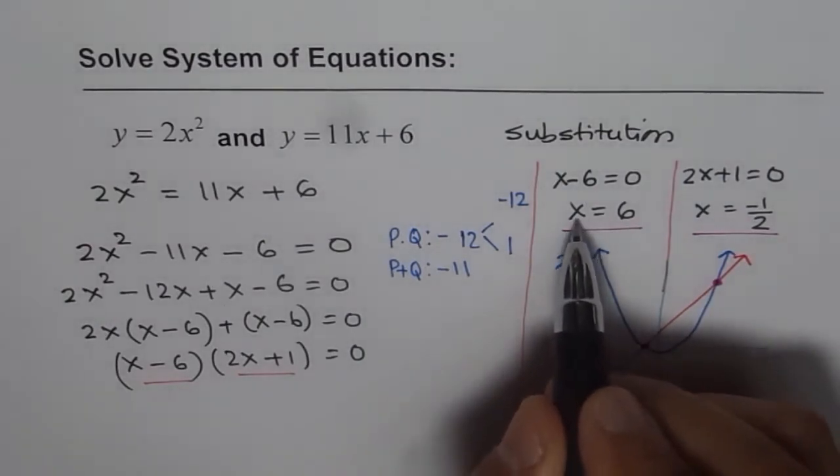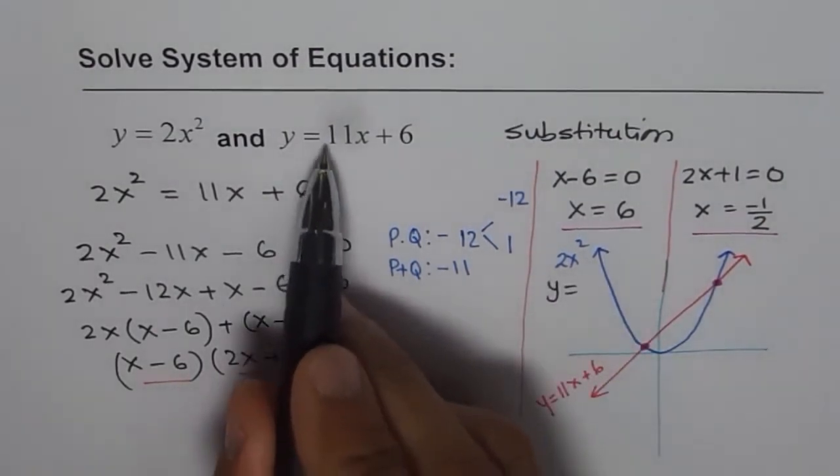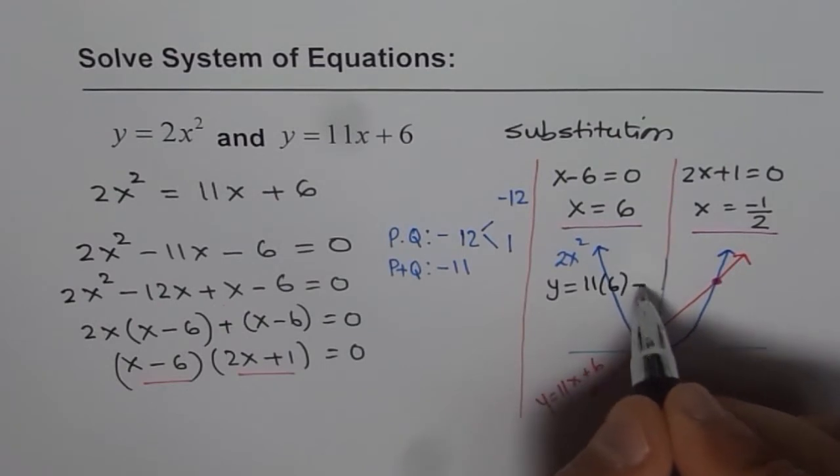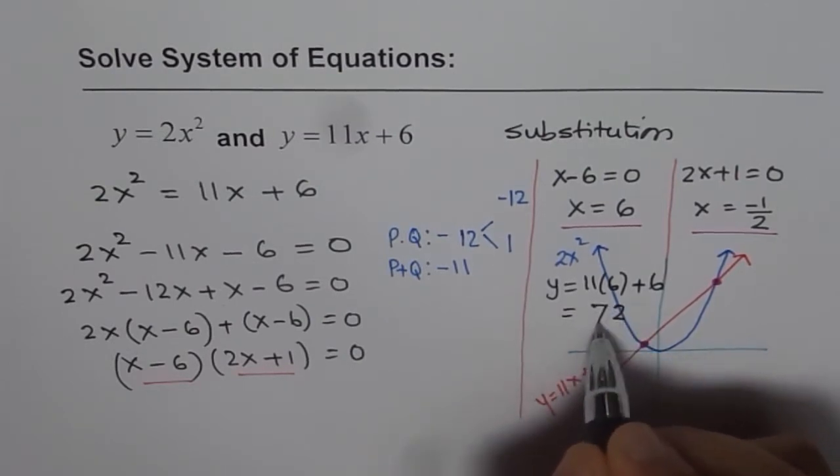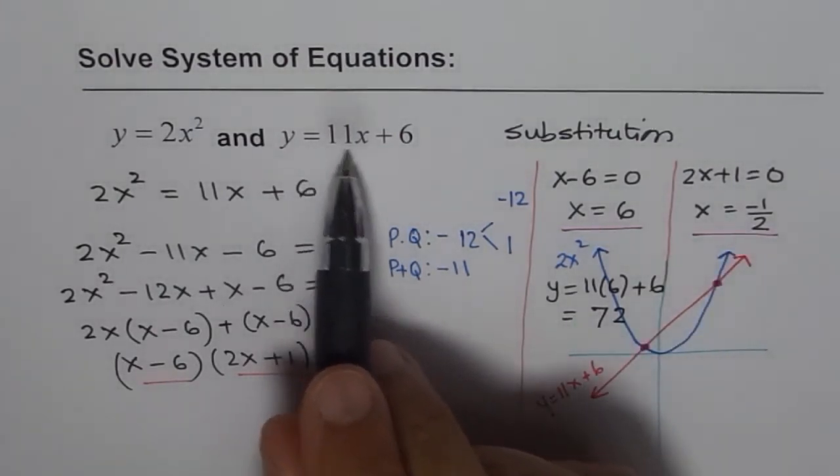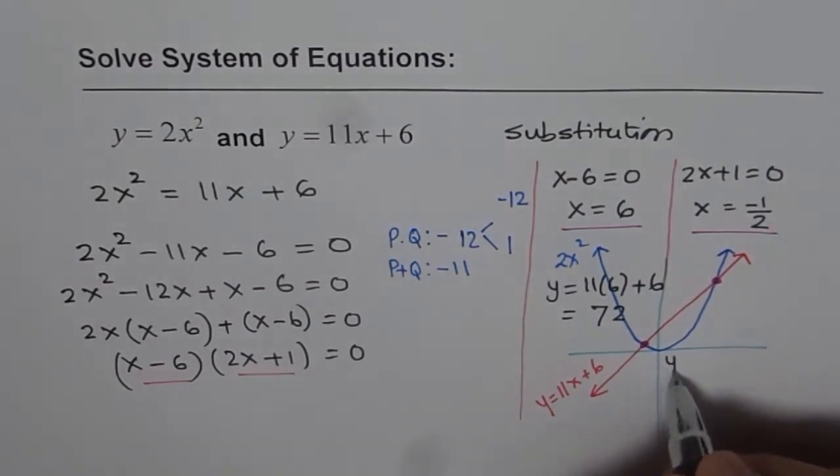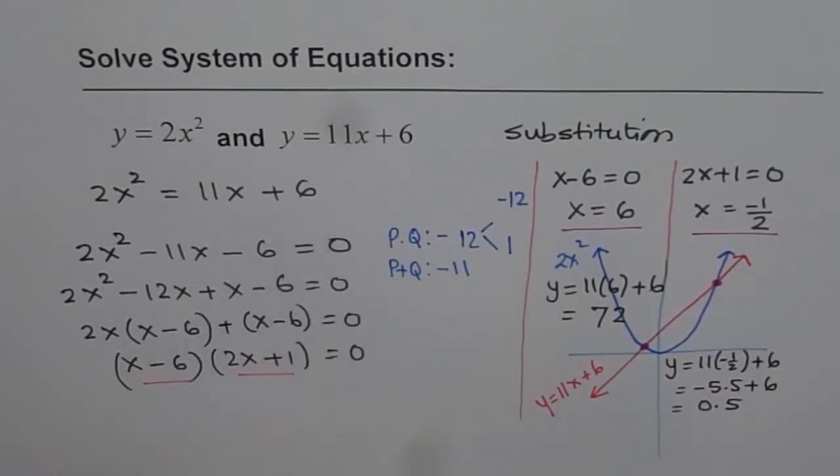So the y value for x equals to 6 will be we can calculate from this equation. Y equals to 11 times 6 plus 6, which is 12 times 6, which is 72. So that is the first point. The second one will be half of minus half of 11 plus 6. So y equals to 11 times minus half plus 6. Minus half of 11 is 5.5 which is minus 5.5 plus 6 and that gives you the answer of 0.5. And therefore we have two solutions for this.